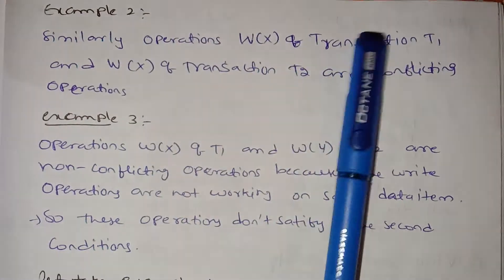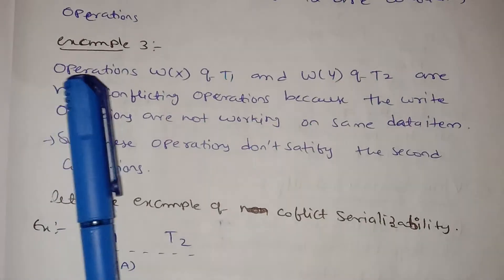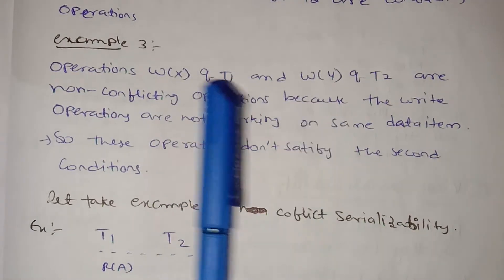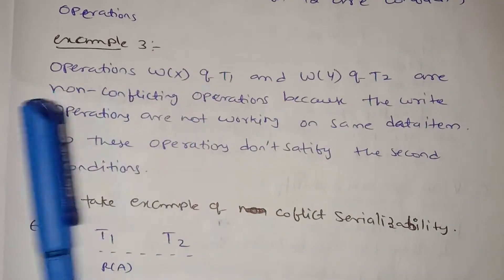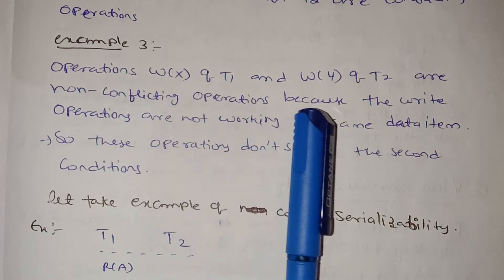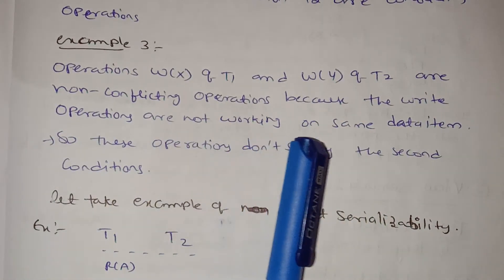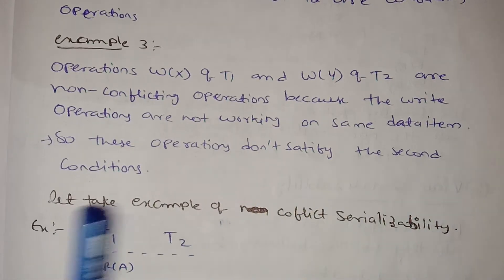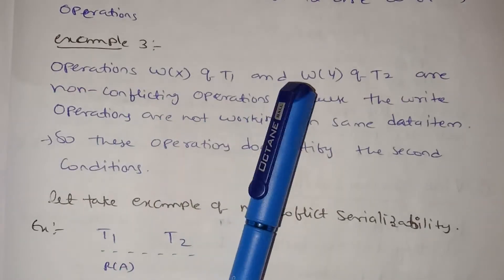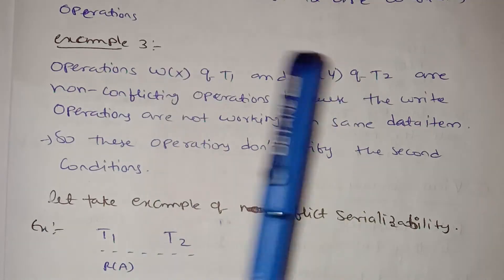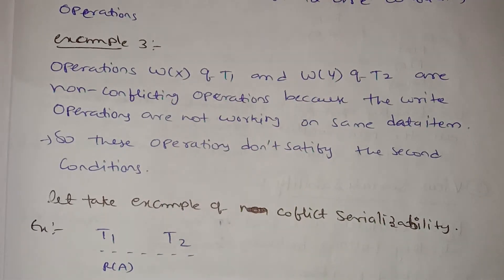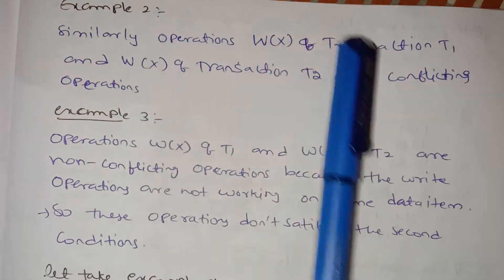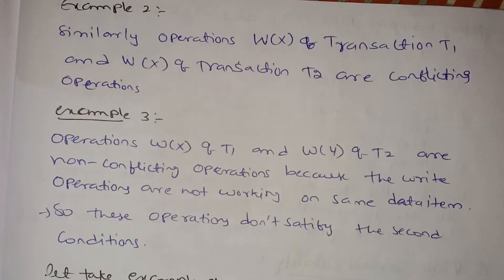Example 3: operation W(X) of T1 and W(Y) of T2. Here the data items are X and Y — they are different. So these are non-conflicting operations because the write operations are not working on the same data item. These operations do not satisfy the second condition, so this is a non-conflicting case.